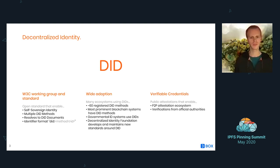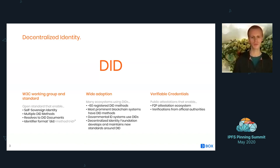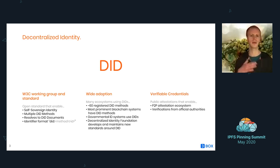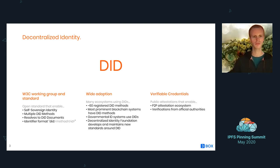The DID document might contain references to different services that this DID has. DIDs have fairly wide adoption — there are almost 60 registered DID methods. Most prominent blockchain systems have some form of DID method associated with them. Ethereum has at least three different ones. Some governmental ID systems have been experimenting with DIDs and issuing credentials to citizens.